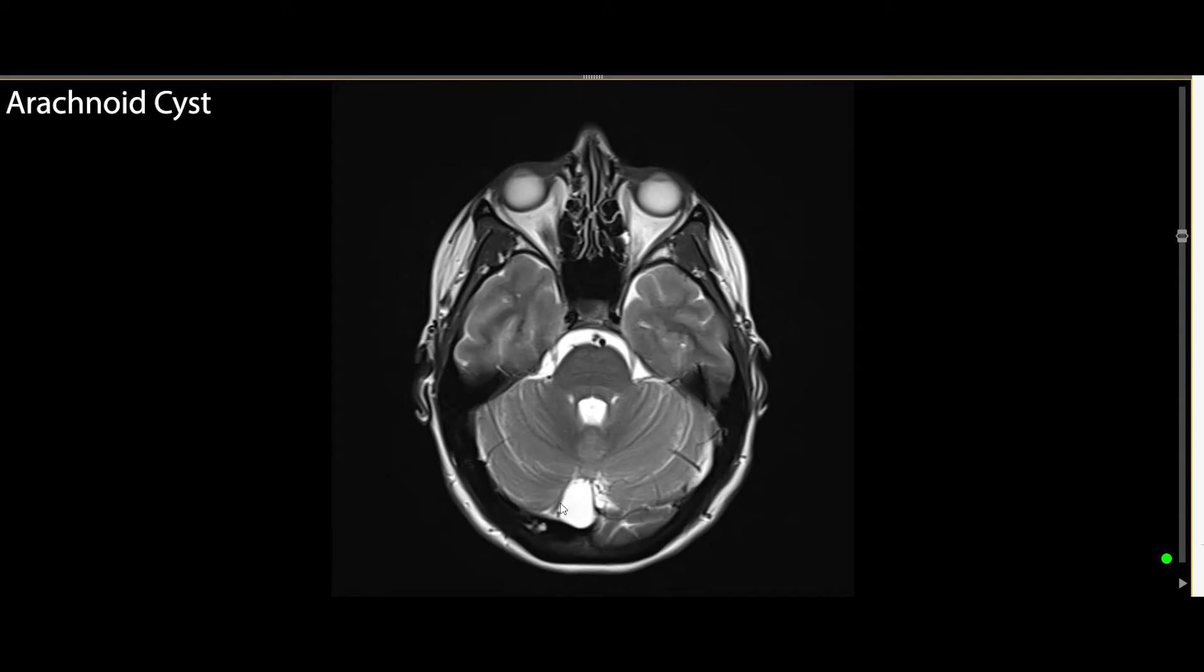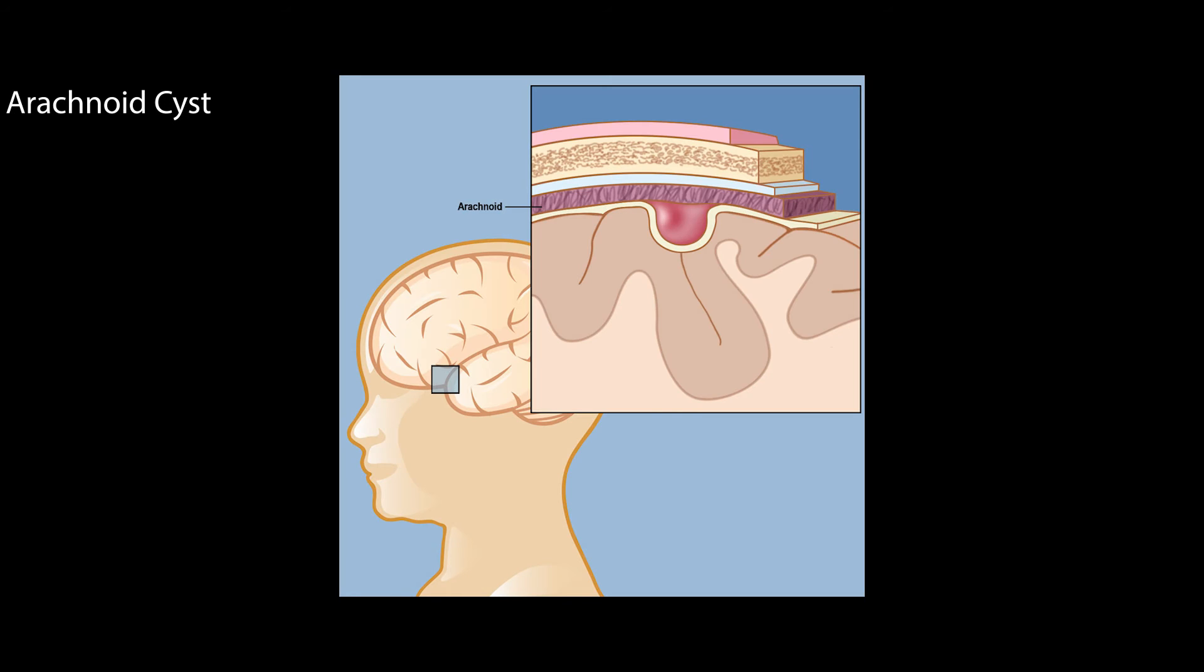It usually fills within the arachnoid membrane. So there are three layers on top of the brain: the pia mater, the arachnoid space, and the dura mater.